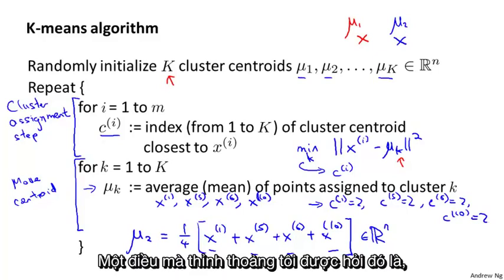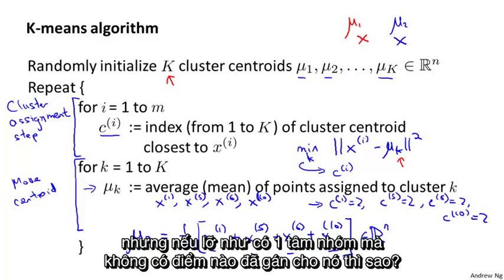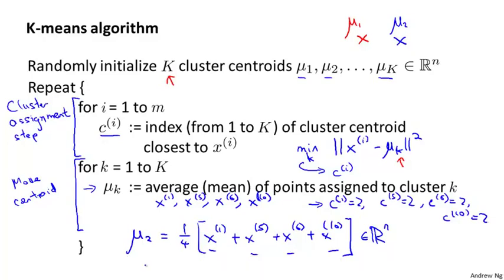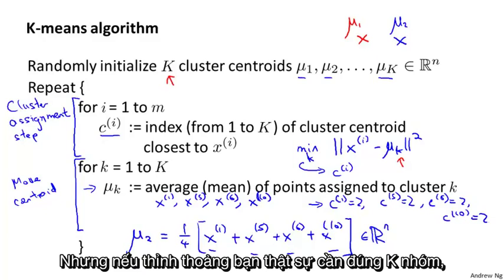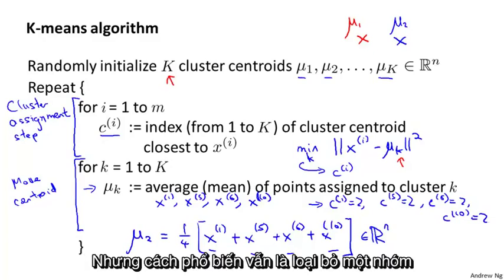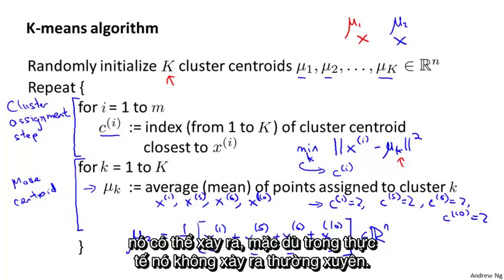One common question is: what if there's a cluster centroid with no points assigned to it? In that case, the more common thing to do is to just eliminate that cluster centroid, ending up with k minus 1 clusters instead of k clusters. But if you really need k clusters, you can randomly reinitialize that cluster centroid. It is more common to just eliminate a cluster if it ends up with no points assigned to it during k-means, and that can happen, although in practice it happens not that often.